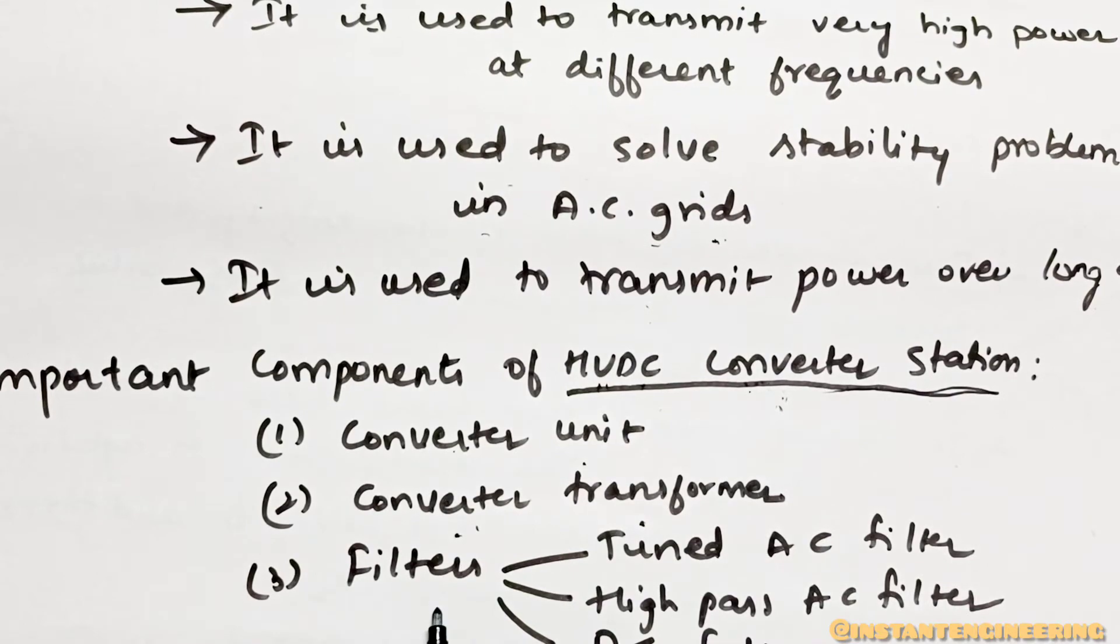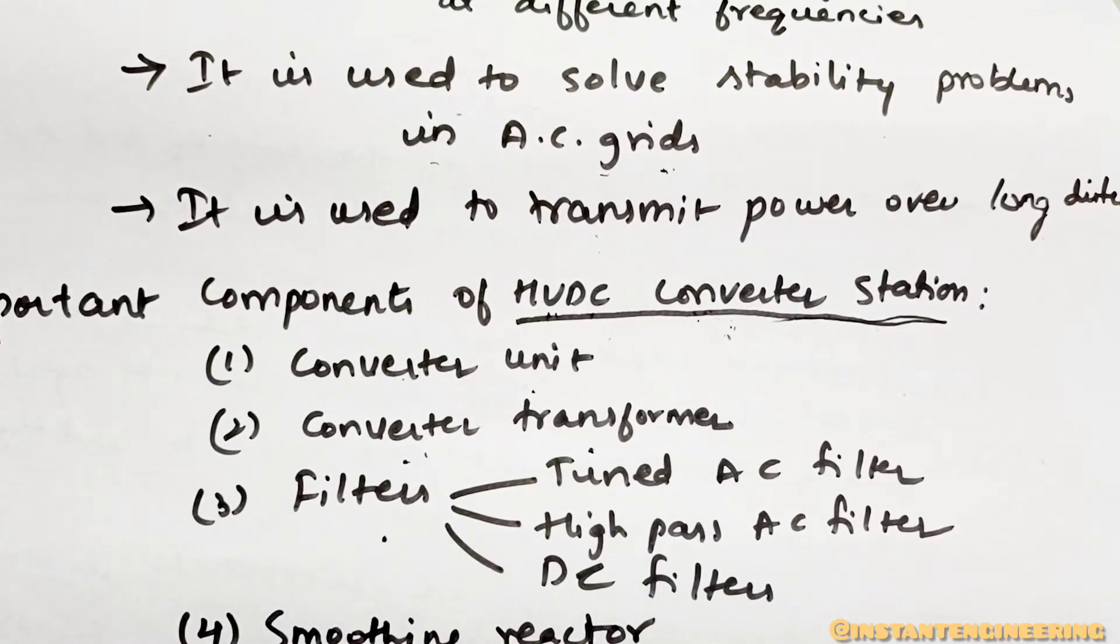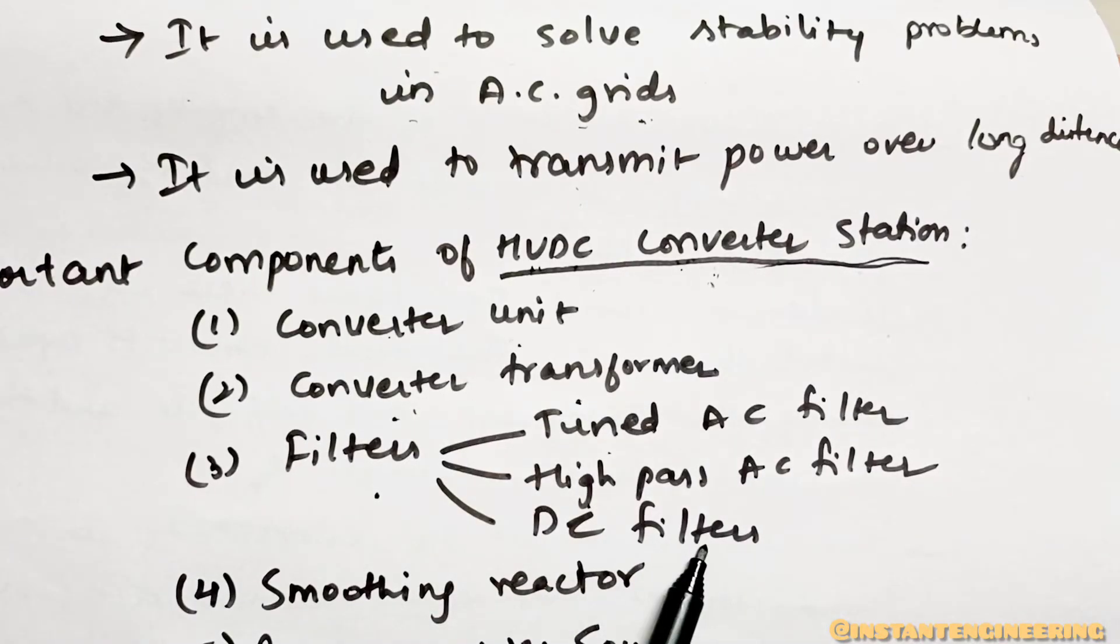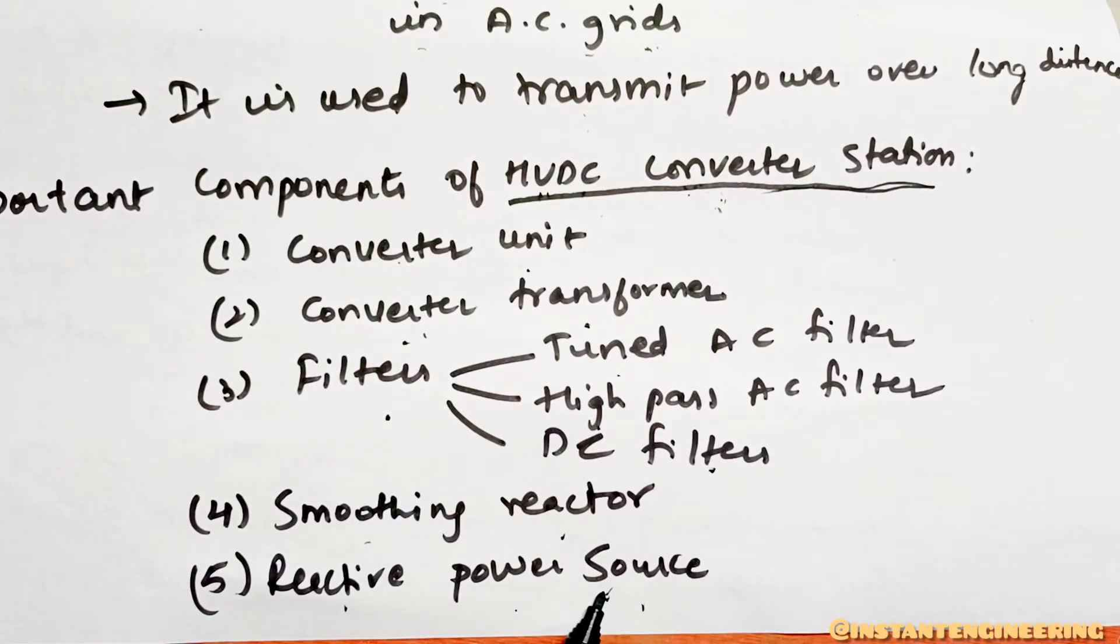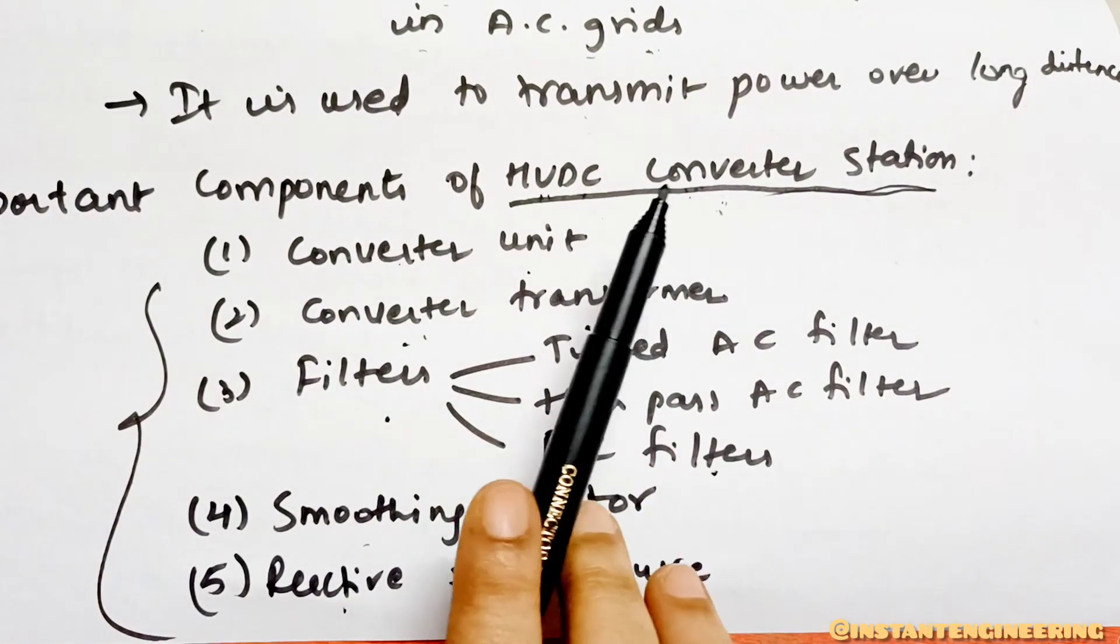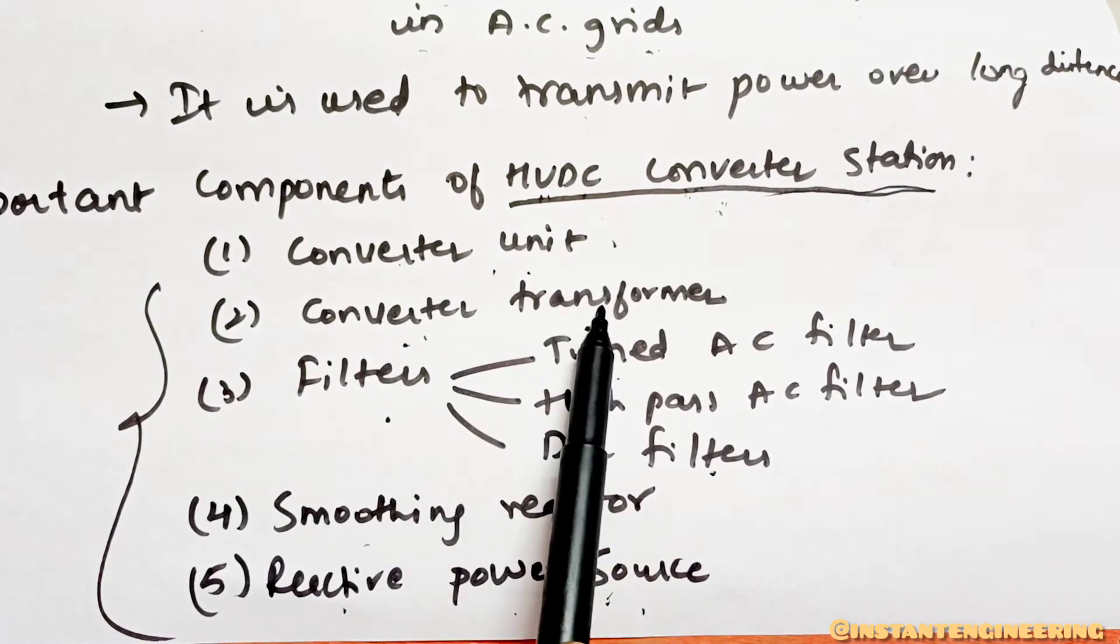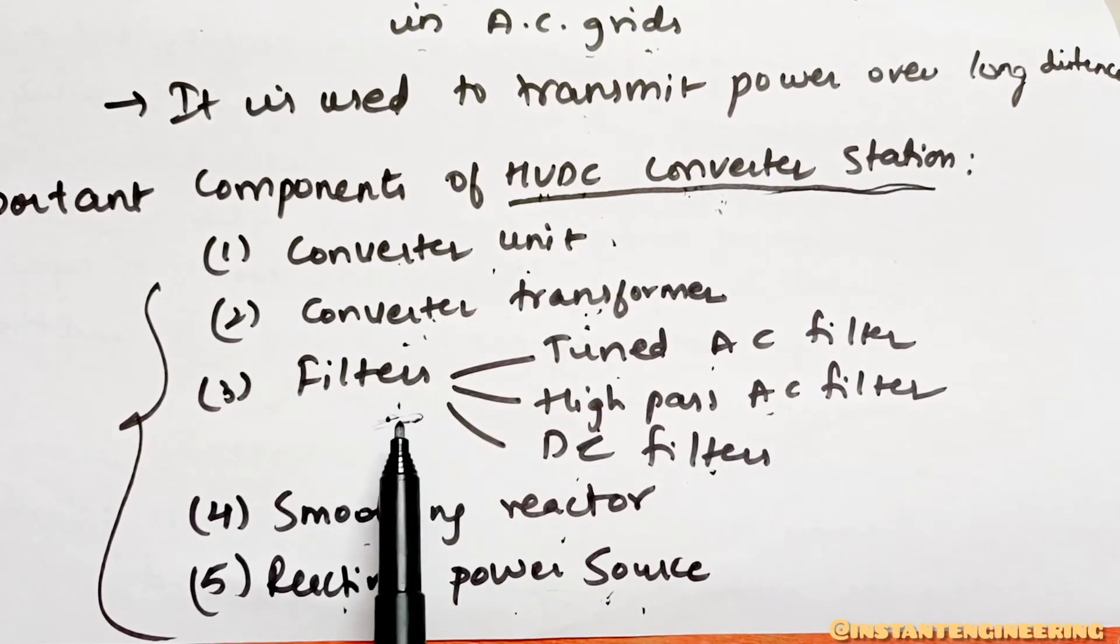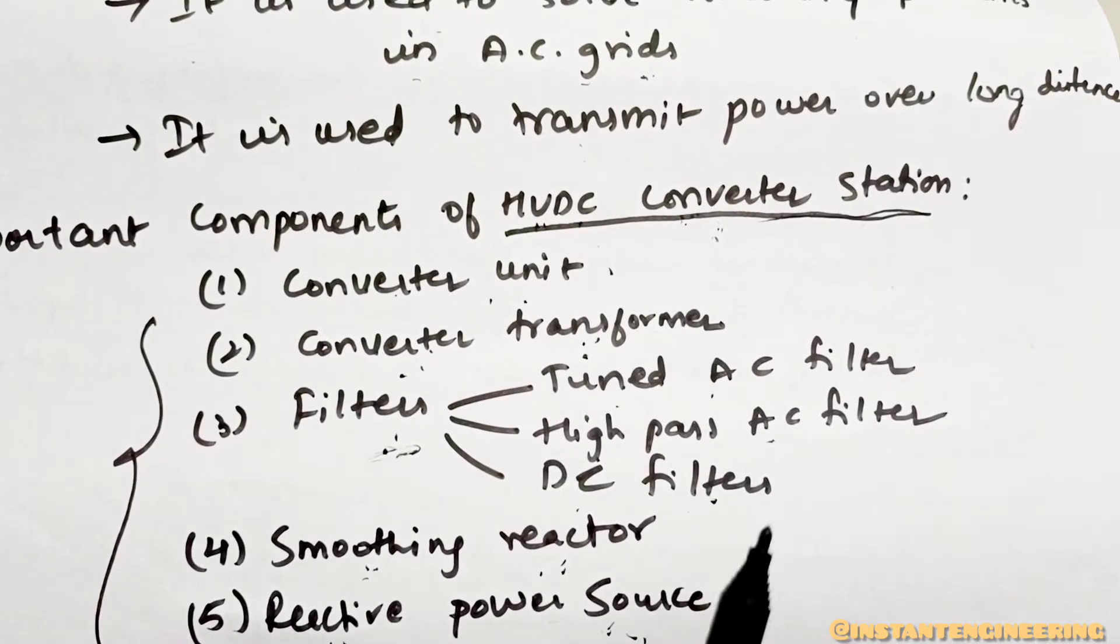We have filters - like you have read earlier, AC low pass filter, high pass filter. Similarly, you have read about all these things. Tuned AC filter, high pass AC filter, DC filters. Next, you need a smoothing reactor and reactive power source. These five things are the most important things which must be there in an HVDC converter station. By the name itself: converter unit, converter transformer, filters (tuned AC, high pass, and DC filters), after the filters are filtered you need a smoothing reactor and reactive power source.